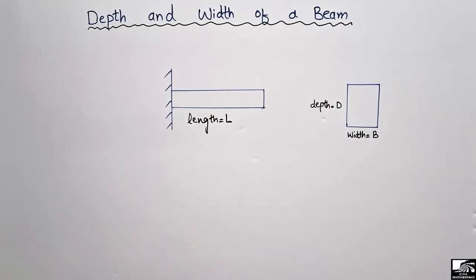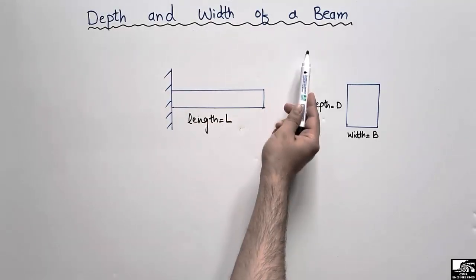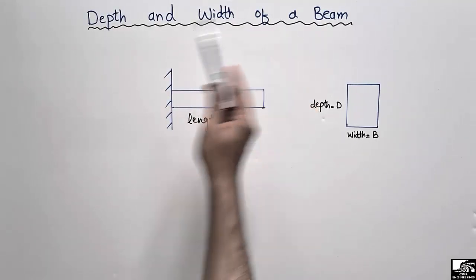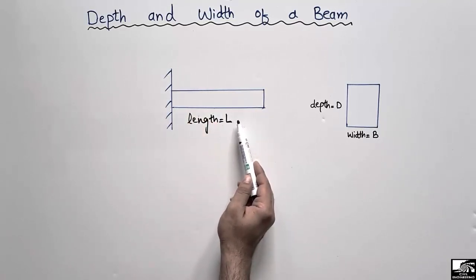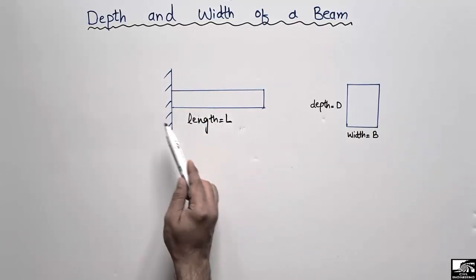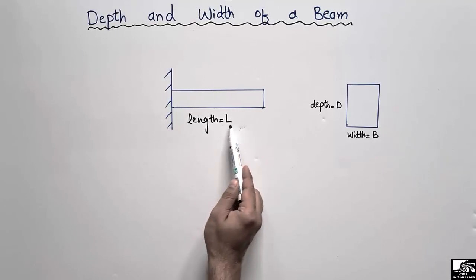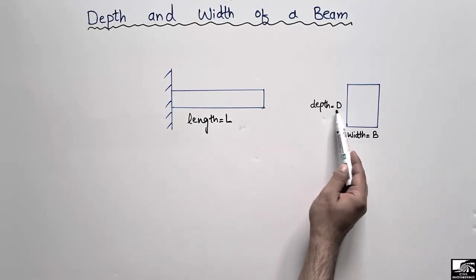Hello guys, welcome back to 7 Engineering YouTube channel. Please subscribe to our channel for daily engineering videos. Today's lecture we are going to find out the depth and width of a beam. We are interested only in the cantilever type of beam, so when there is a cantilever beam of length L, we are interested to find out the minimum thickness or depth of a beam.